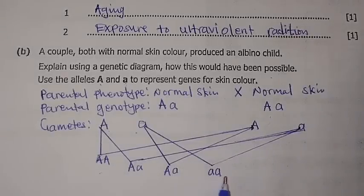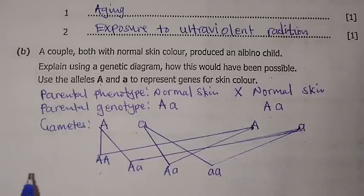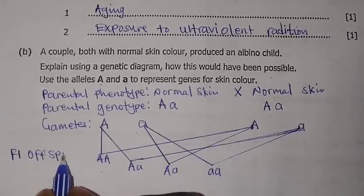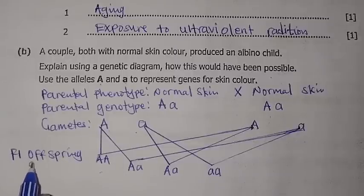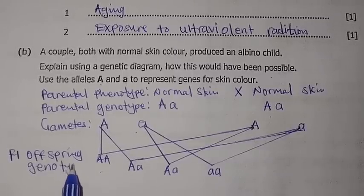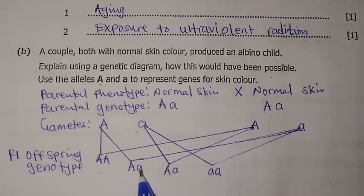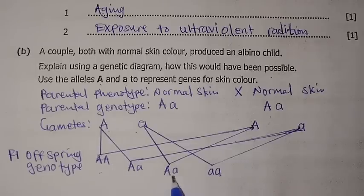This is the genotype of the offspring — our F1 offspring genotype. The first offspring has genotype AA, which is homozygous dominant. The second and third offspring have genotype Aa, which is heterozygous. The fourth offspring has genotype aa, which is homozygous recessive.